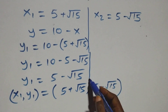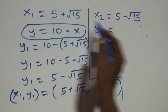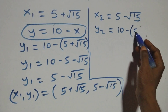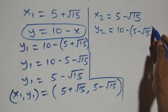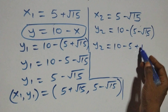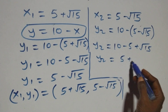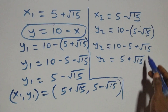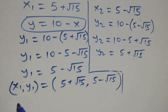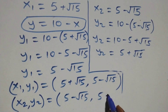Using the same relation for y₂: y₂ equals to ten minus x₂, which is ten minus (five minus root fifteen). Opening the bracket, y₂ equals to ten minus five plus root fifteen, giving y₂ equals to five plus root fifteen. So the second solution pair (x₂, y₂) equals to (five minus root fifteen, five plus root fifteen). Note that this solution is an interchange of the first — x here is the same as y there, and vice versa.